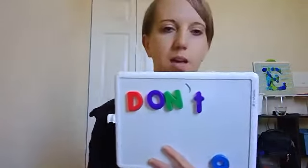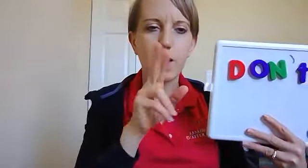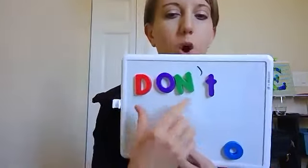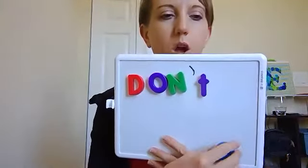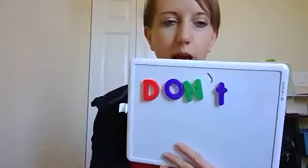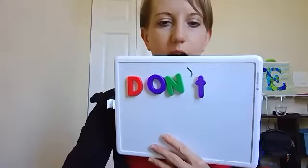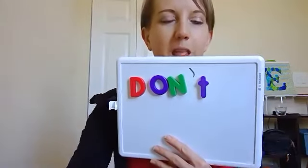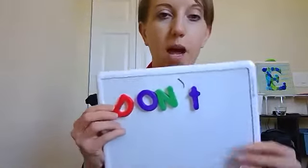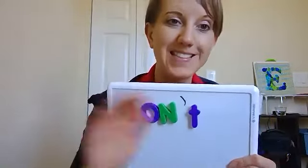So when we make contractions — when we combine two words to make them smaller — we do three things: we combine the words, we take away the letter O, and we replace it with an apostrophe, this mark right here. We're gonna go over this more in class today, and I'll also have some worksheets that you can practice at home with this skill. I'll see you in class. Bye!